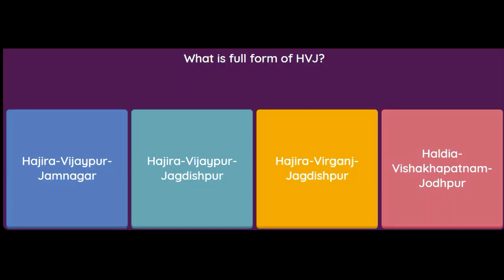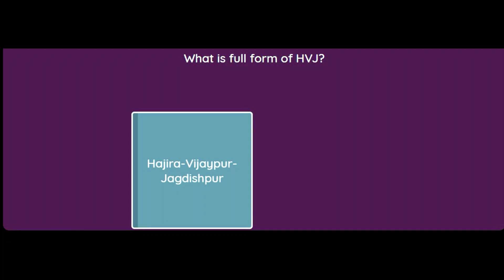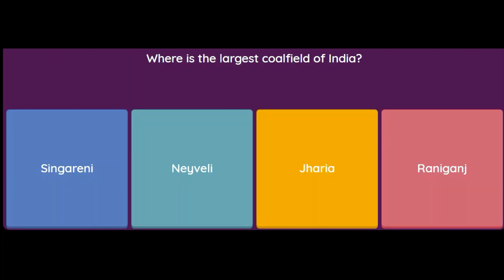What is the full form of HVJ? The options are Hajira–Vijaypur–Jamnagar, Hajira–Vijaypur–Jagdishpur, Hajira–Virganj–Jagdishpur, or Haldia–Visakhapatnam–Jodhpur. HVJ is basically a pipeline for gas. H is the starting point, Hajira; it passes through Vijaypur and ends at Jagdishpur. So the answer is Hajira–Vijaypur–Jagdishpur.